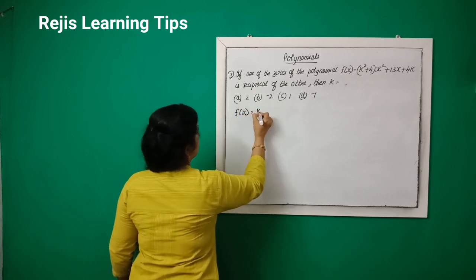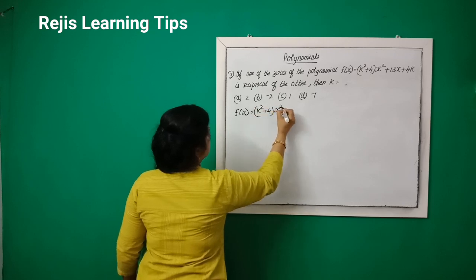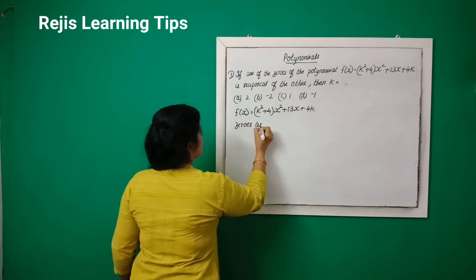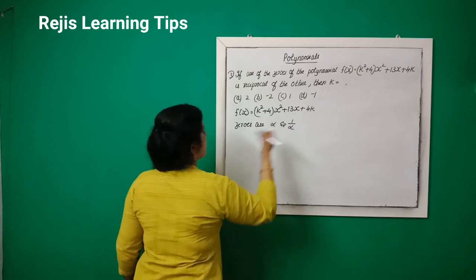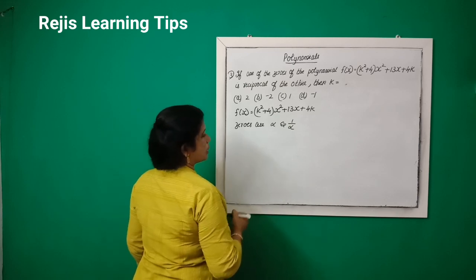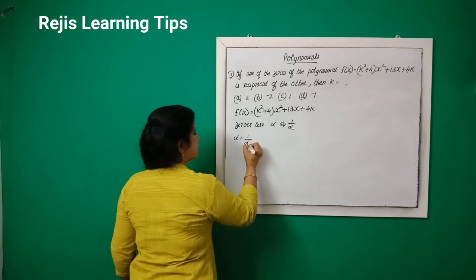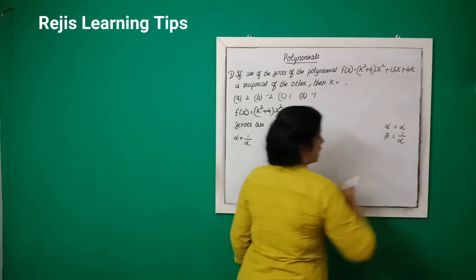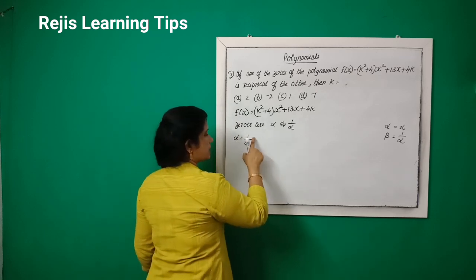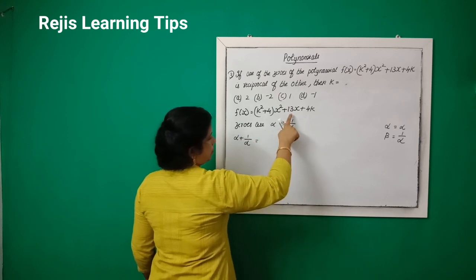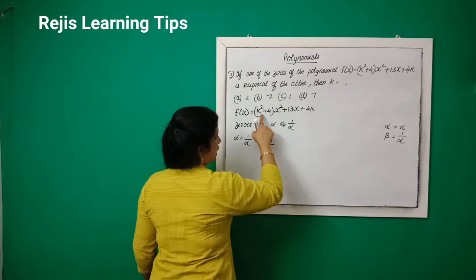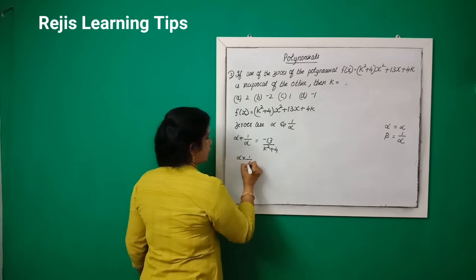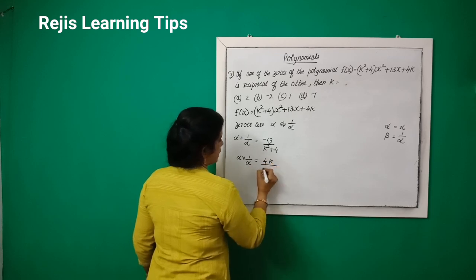The polynomial is (k² + 4)x² + 13x + 4k. The product of the zeros — alpha times 1/alpha — is equal to c/a, which is 4k divided by (k² + 4).